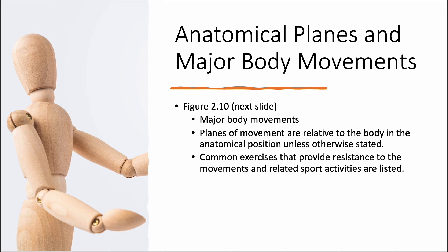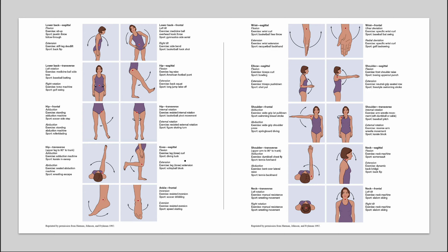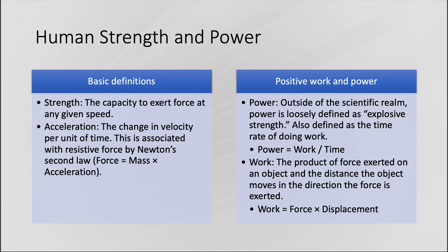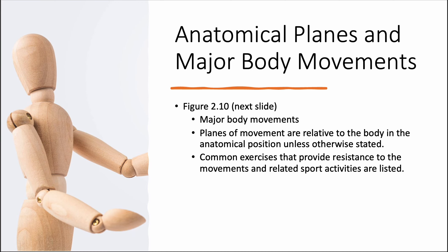There are major body movements associated with each plane, and I recommend going through figure 2.10 in your book. You need to know what adduction, abduction, flexion, and extension are — these are very important, both for your CSCS test and for real-world application. If you don't know what type of motion a deadlift involves, it'll be challenging to understand what the reaction of those muscles will be. Know these terms by the back of your hand.